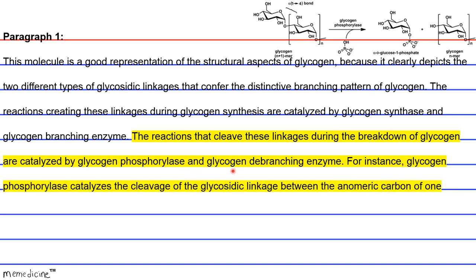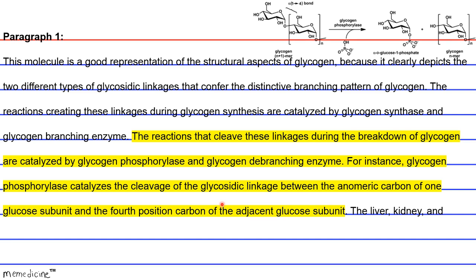The reactions that cleave these linkages during the breakdown of glycogen are catalyzed by glycogen phosphorylase and glycogen debranching enzyme. For instance, glycogen phosphorylase catalyzes the cleavage of the glycosidic linkage between the anomeric carbon of one glucose subunit and the fourth carbon position of the adjacent glucose subunit. The liver, kidney, and muscle contain ample supplies of these and other enzymes involved in the synthesis and breakdown of glycogen.